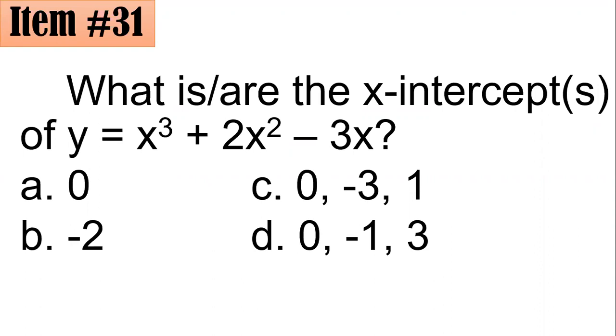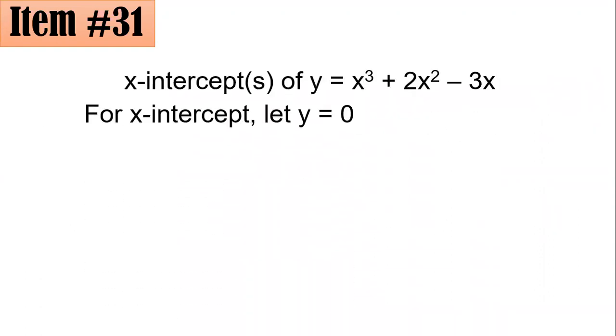Number 31, what is or are the x-intercepts of y equals x cubed plus 2x squared minus 3x? Is it a, 0, b, negative 2, c, 0, negative 3, 1, or d, 0, negative 1, 3? To solve for the x-intercepts of your function, we actually let y equal 0. So with this, if y is 0, so you have 0 equals x cubed plus 2x squared minus 3x.